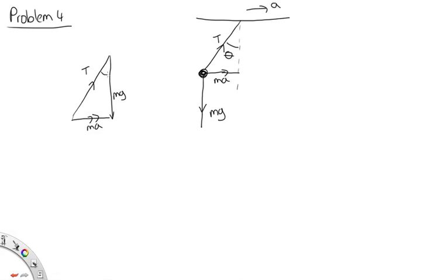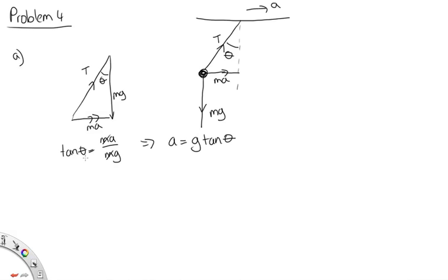From the symmetry of the vector diagram, the tension T is vertical, mg acts vertically, and this angle is θ. Part A asks us to derive an expression for A in terms of θ using simple trigonometry. Tan θ = opposite/adjacent = ma/mg. The m's cancel, giving A = g tan θ. Part B: when θ = 20°, A = 9.8 × tan 20 = 3.6 m/s². If we take 20 as two significant figures, we give the answer to 2 significant figures.